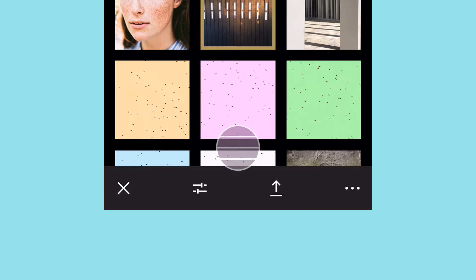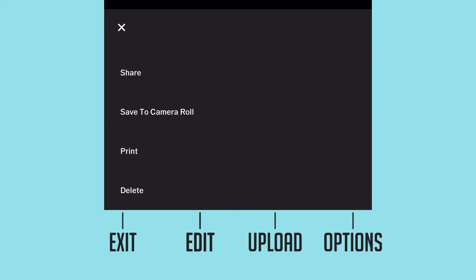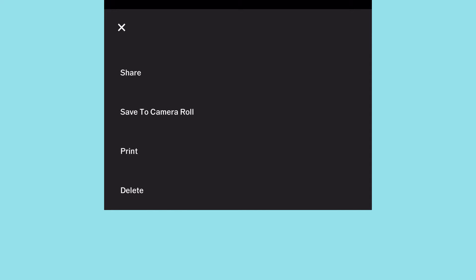Once you tap on an image in VSCO, at the bottom you have the exit button, the edit button, the upload button up close to your grid, and other options to share. I did go over all the menus in VSCO in my other video, so make sure to check that out — it'll be in the cards above.